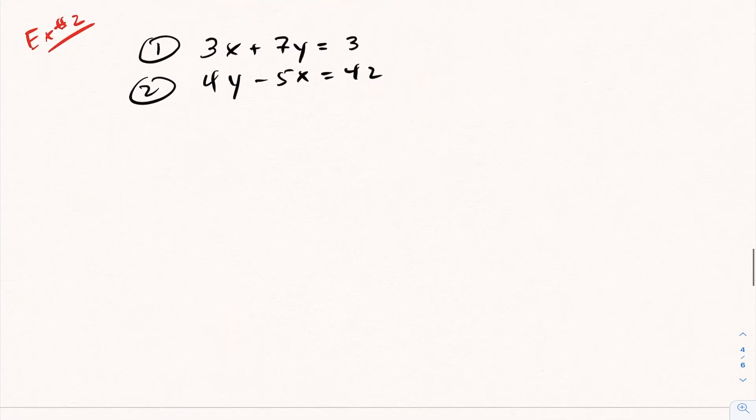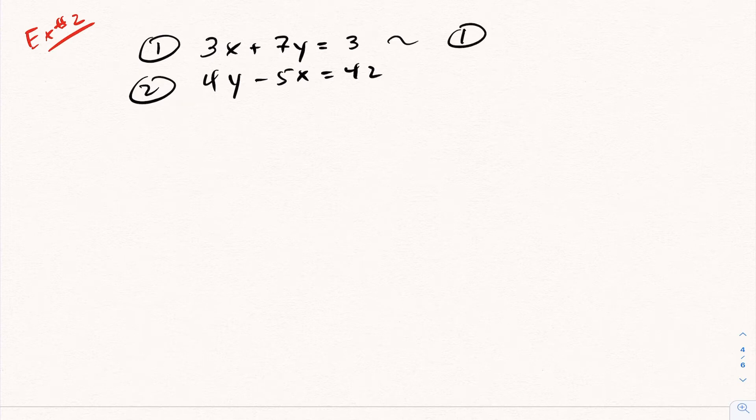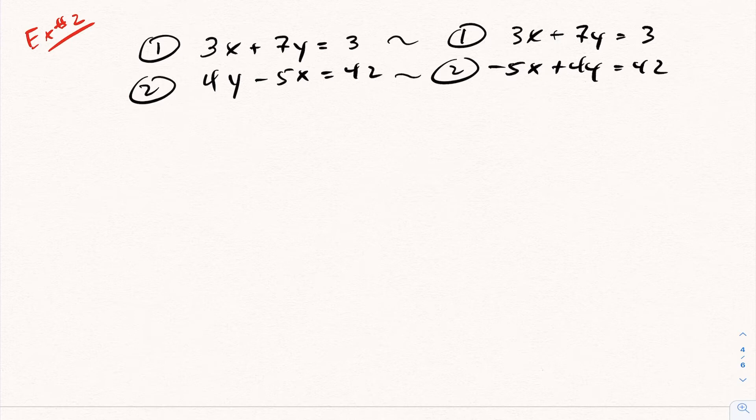So for this equation here, first thing you want to do is you want to make sure it's written properly. So this is 3x plus 7y, it's kind of written in alphabetical order. Equation 2, they kind of mix it up on you. This will be negative 5x plus 4y is 42. Now assessing this, I can get rid of the x's or y's. In this case here I'm going to choose to get rid of the x's.